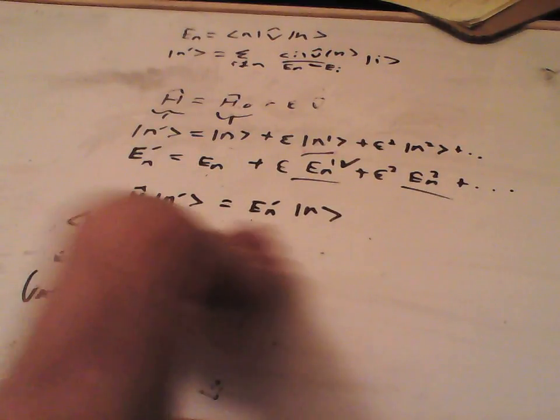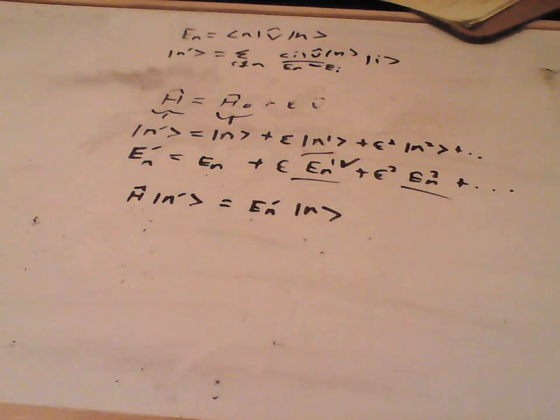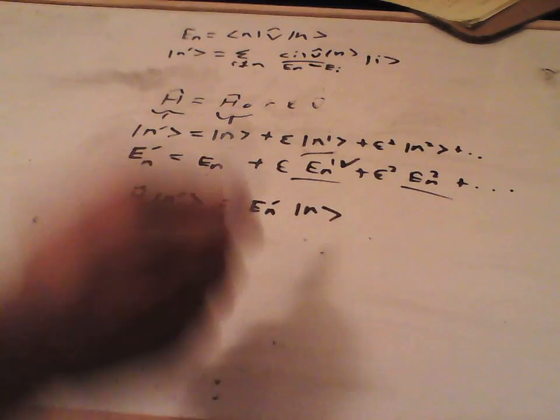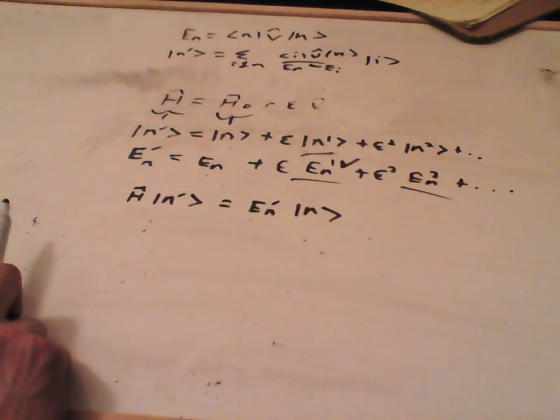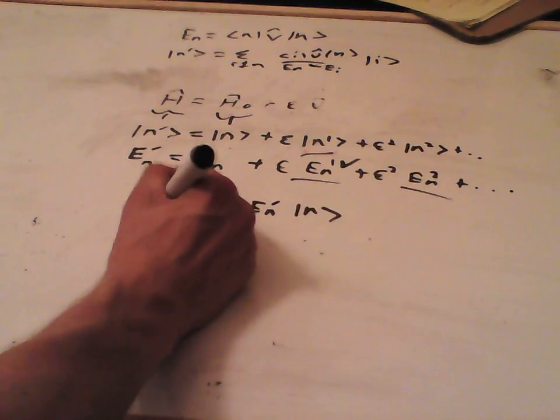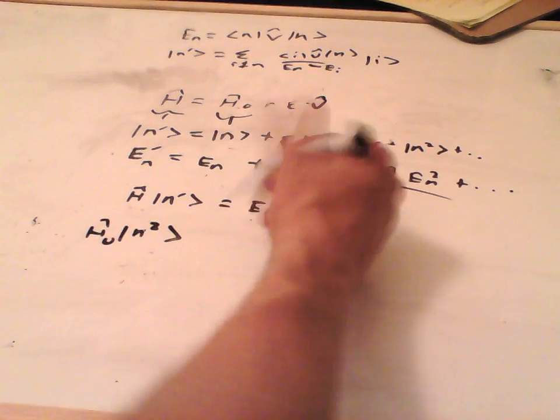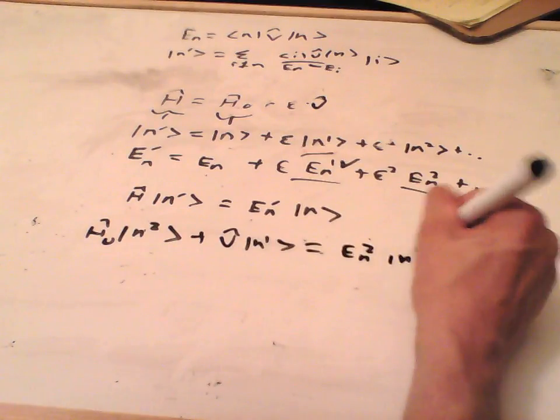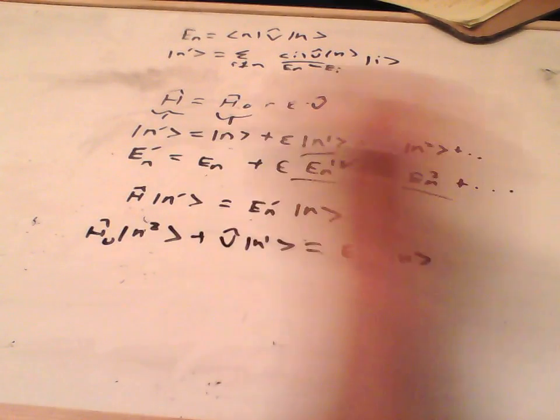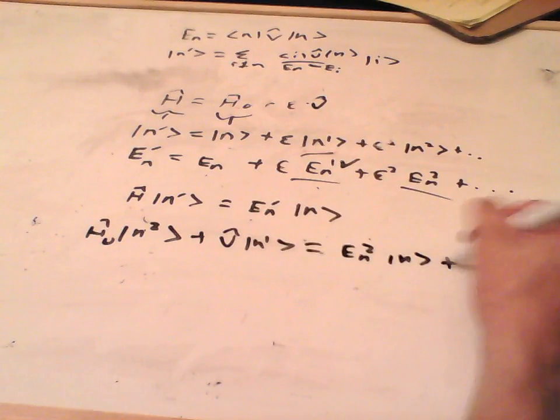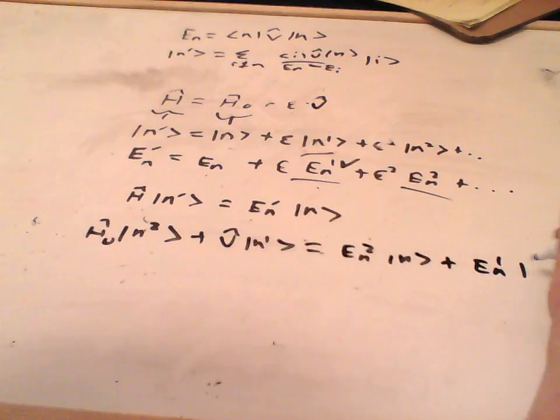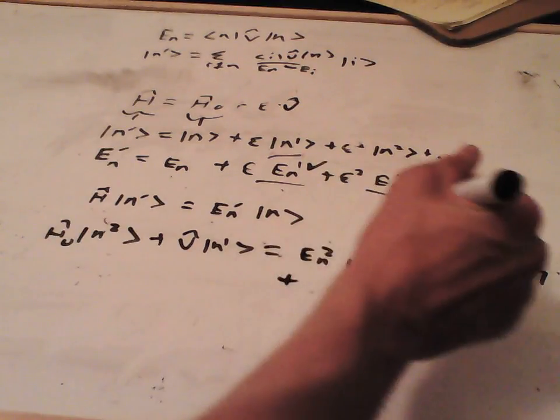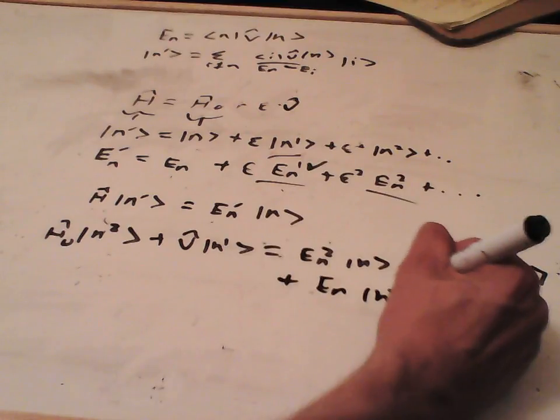So we're now going to equate second order terms in this. Now the second order terms, we get this term here. So on this side we get En2 times by n. And that's times by H0. We also get V n1. And on this side we are going to get En2 times by n, and En1 times by n1, and En times n2.